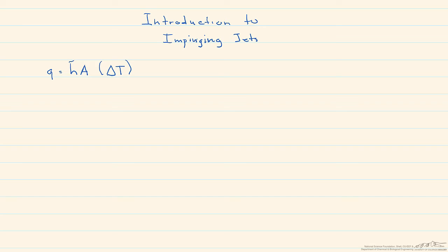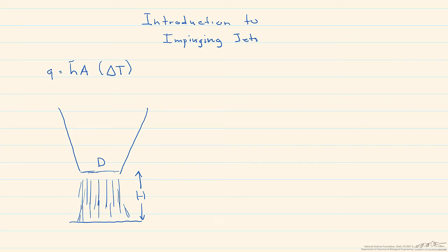Let's start with a diagram of an impinging jet. Here we're going to start with the nozzle, and the width of that nozzle, depending on whether it's a slot or a round nozzle, is known as D or W. At the nozzle exit, we have a velocity and a temperature — velocity at the exit and temperature at the exit — and these will be used in the Reynolds number as well as in Newton's law of cooling.